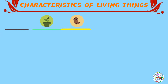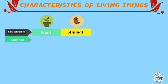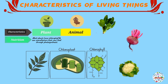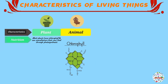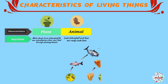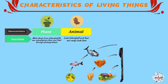Number one has to do with nutrition. Most plants have chlorophyll — the green pigment that is present within leaves. As a result, they are able to carry out photosynthesis and therefore manufacture their own food. Animals, on the other hand, lack chlorophyll and therefore cannot manufacture their own food and have to feed on ready-made food from plants or other animals.